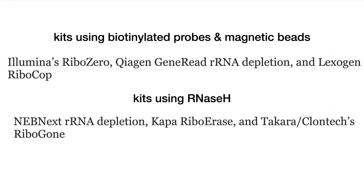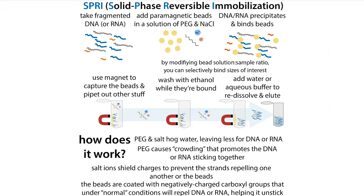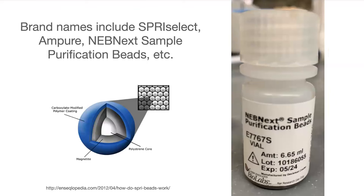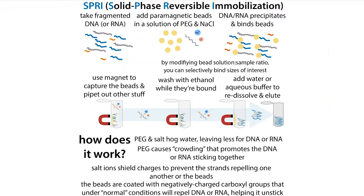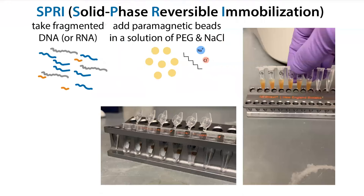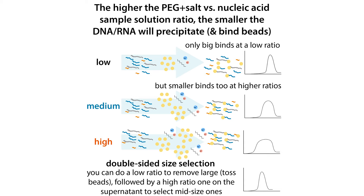These kits also often use magnetic beads, but here the beads are used as a purification strategy. These are SPRI beads — solid phase reversible immobilization. Instead of permanently binding your nucleic acids through the probes, high concentrations of PEG and NaCl cause the RNA or DNA to precipitate and bind to the beads temporarily. You then collect the beads, wash, and elute your DNA or RNA by changing conditions. You can even size-select depending on how much precipitant you add.